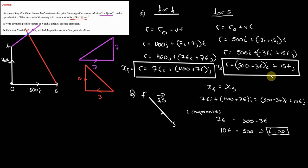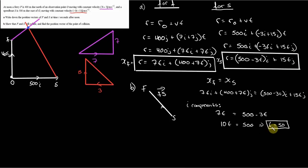To ensure that this is the correct value of T, let's solve for our J components. J components for X sub F is 400 plus 7t, set equal to the J components for X sub S, which is 15t. Subtract 7t from both sides, we get 8t equals 400. Then divide by 8, we get T equals 50. So that's indeed correct. We've just shown that F and S will collide at T equals 50.